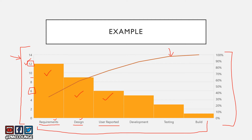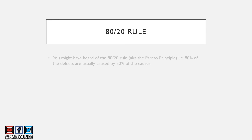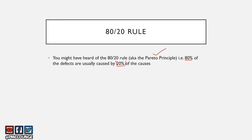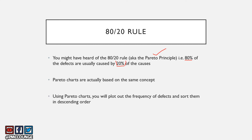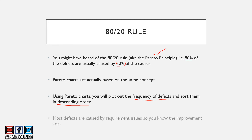The 80-20 rule, also known as the Pareto principle, states that 80% of defects are usually caused by 20% of the causes. Pareto charts are based on this same concept. In our example, we plotted the frequency of defects sorted in descending order, and we realized that the most defects came from the requirements category.